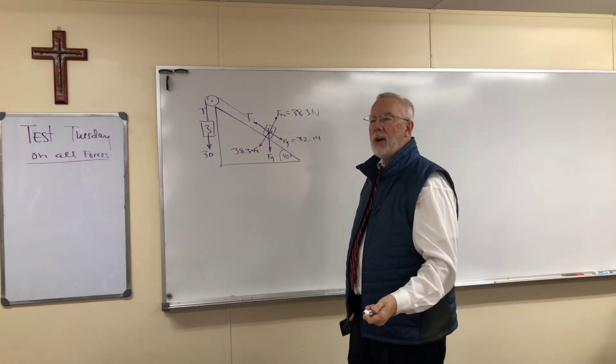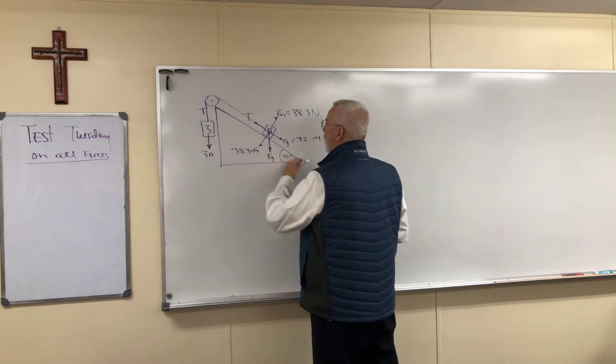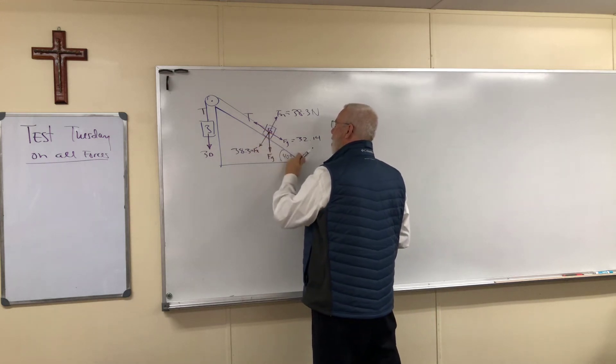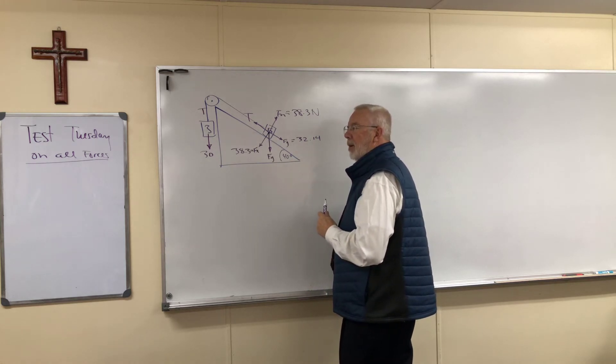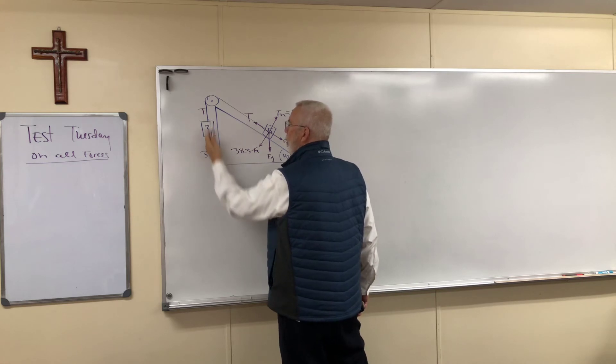So the tension on the string here, which is the same as the tension on the string here, the larger force is the one that's going to win out. So this one's a little bit larger, so the five kilogram block is going down the incline plane and the 30 newton object is going up.